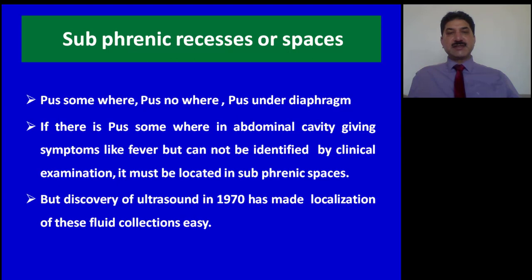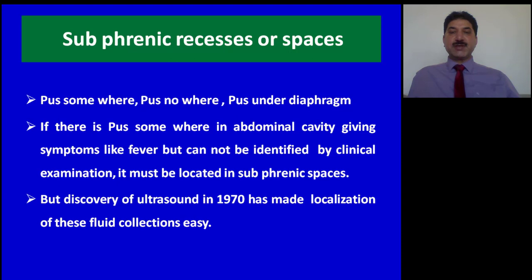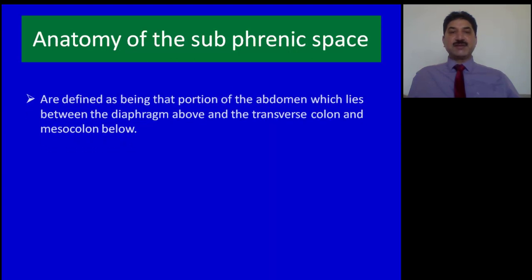In surgical practice, it is said that 'pus somewhere, pus nowhere, pus under diaphragm.' What does that mean? If there is pus somewhere in the abdominal cavity giving symptoms like fever but cannot be identified by clinical examination, it must be located in subphrenic spaces. But the discovery of ultrasound in 1970 has made localization of these fluid collections easy.